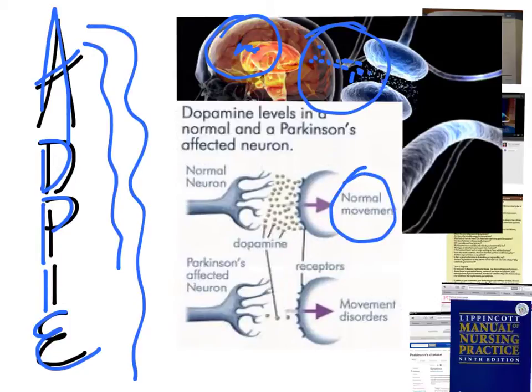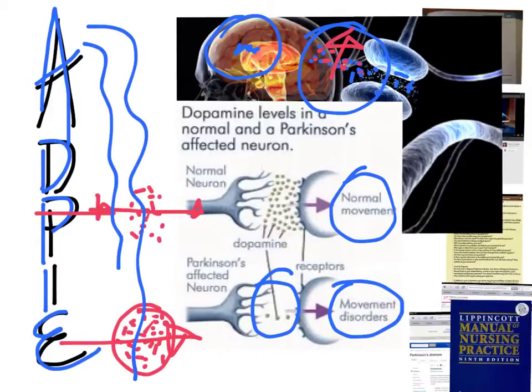Normally these things travel across the nerve synapses, but because there's damage done to the substantia nigra of the brain, then this dopamine is reduced. Unfortunately, movement disorders develop or begin to be displayed.